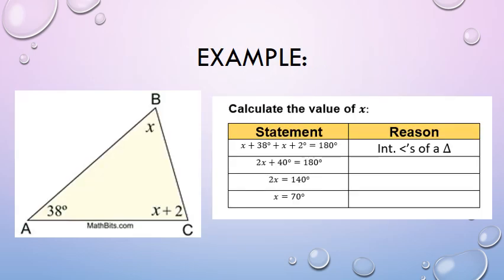For example, let's look at this one. It says one of the angles is 38 degrees, the other one is x, and the other one is x plus 2. We know that all angles of a triangle add up to 180 degrees. So: x plus 38 plus x plus 2 equals 180 degrees — reason: interior angles of a triangle. Simplify the left-hand side: 2x plus 40 equals 180. Subtract 40: 2x equals 140. Divide both sides by 2: x equals 70 degrees.